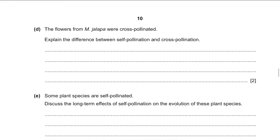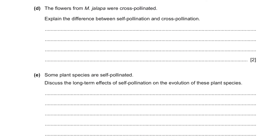Part D. The flowers from M. jalapa were cross-pollinated. Explain the difference between self-pollination and cross-pollination. Cross-pollination is when you pollinate between different flowers, and self-pollination is when you pollinate within the same flower. In the case of M. jalapa, it was between two flowers so it's cross-pollination. You may also add the definition of pollination to your answer to be sure you have enough points to get full marks.